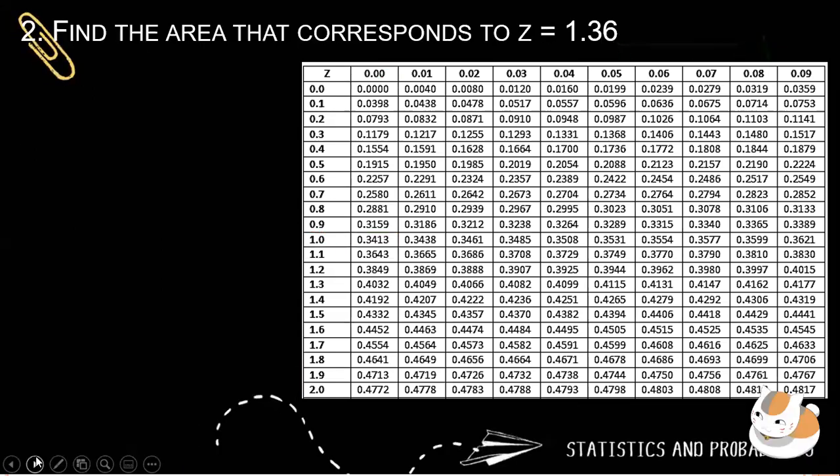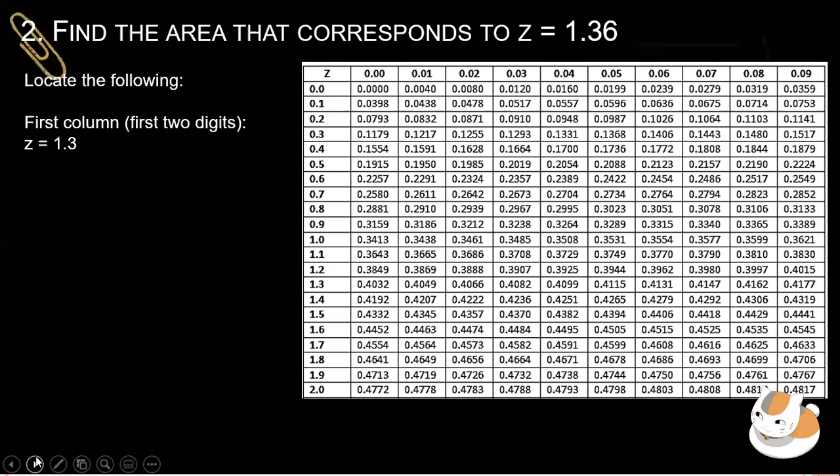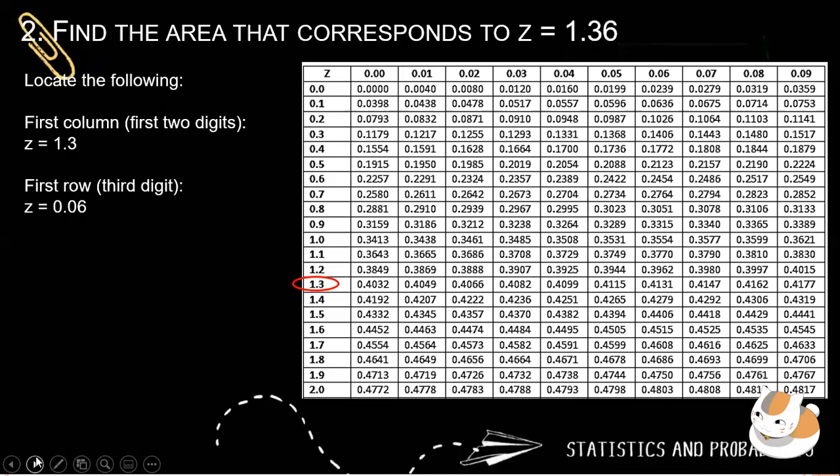Next, find the area that corresponds to Z equals 1.36. First, we locate the following. First column, the first two digits, 1.3. So that is the Z value. Let's have the first row. Let's look at the third digit. It's 0.06. And then find intersection. The intersection is 0.4131. So that is now our area under the normal curve.